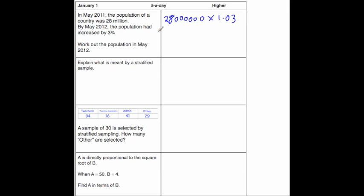So whenever we do that on our calculators, 1, 2, 3, 4, 5, 6 times by 1.03, we get an answer of 28,840,000. That's it. So that's the first question done.